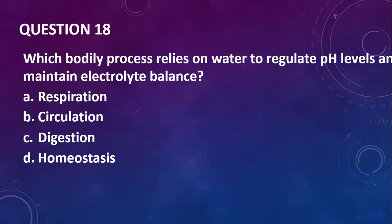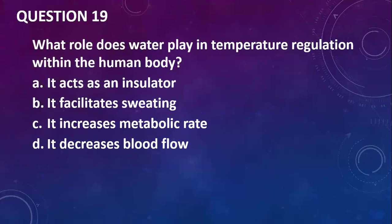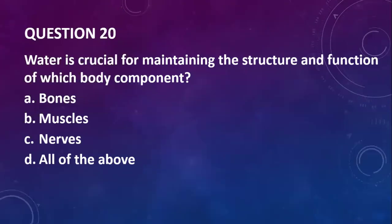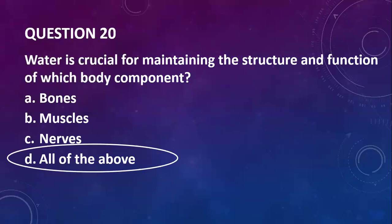Question eighteen: which bodily process relies on water to regulate pH levels and maintain electrolyte balance? You have respiration, circulation, digestion, and homeostasis. Question nineteen: what role does water play in temperature regulation? I think it facilitates sweating. Question twenty: water is crucial for maintaining the structure and function of which body components — bone, muscle, nerves? All of the above.